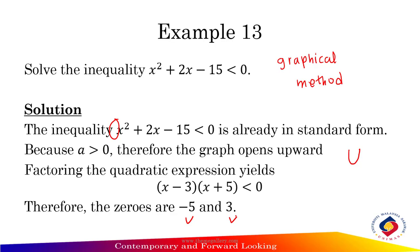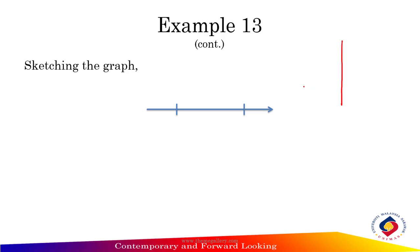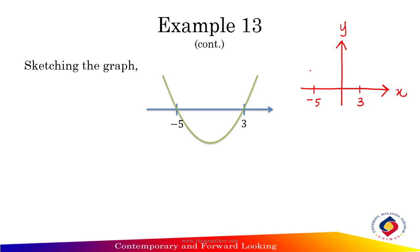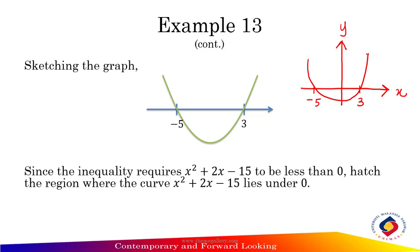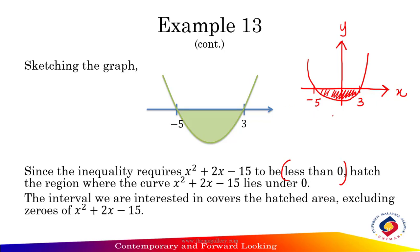Next step: sketch the graph. Draw the x and y-axis, and estimate -5 and 3 on the x-axis. Draw the smiling graph. Since the inequality requires x² + 2x - 15 to be less than 0, shade the region where the curve lies under 0. So y < 0 is the region below the x-axis.